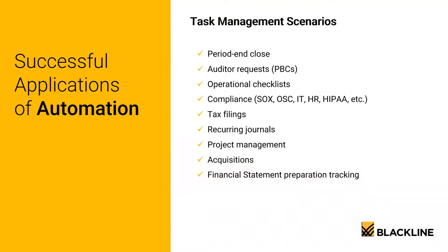The task management module is used to create checklists. The most common example is a month-end close checklist, where you can see every task that's needed to close the books and who's responsible for them. There are a lot of benefits to keeping your checklist in Blackline. For one, it's a huge time saver. The system has reports showing all completed and uncompleted tasks that can be run at any point in the month-end close. If you're having status meetings or emailing your team for status updates, that need goes away with Blackline because all that information is reportable in the system.